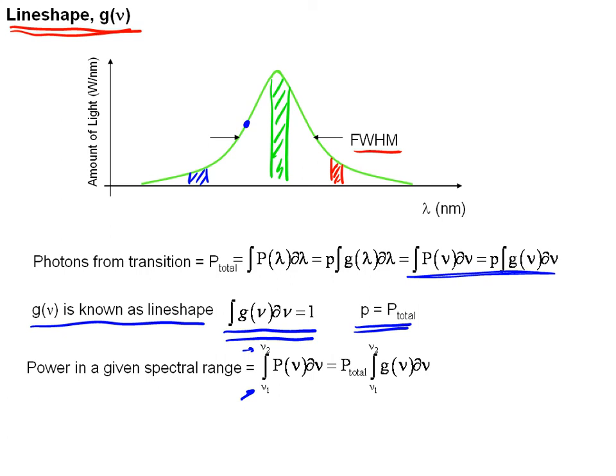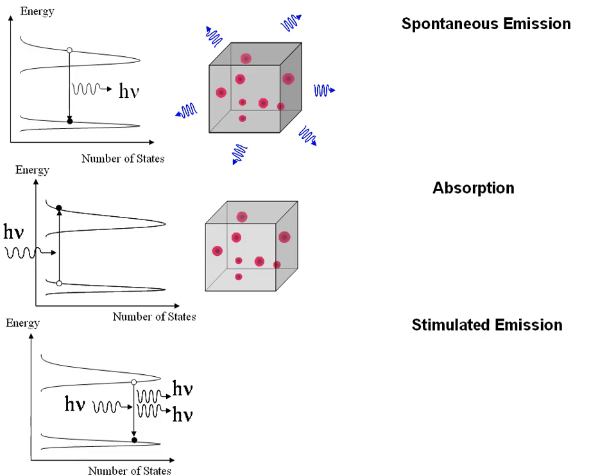The line shape simply gives us a probability that a transition will occur or we will see light of some particular frequency, wavelength, or color. The larger the value of the line shape means we have a higher probability of seeing that photon. We have a higher probability of seeing a photon at this particular wavelength or color of light. That's all given by the line shape function. It's just a function that says how the wavelengths are distributed over frequency.